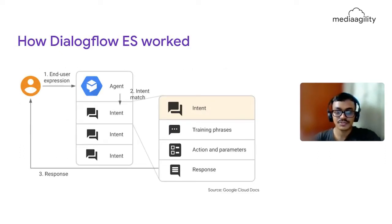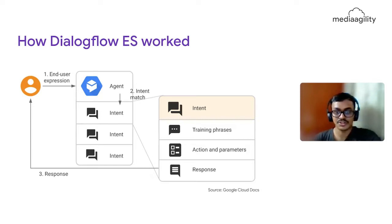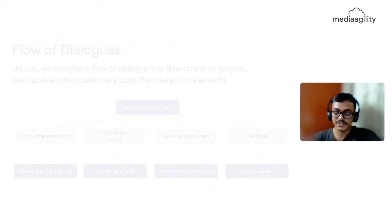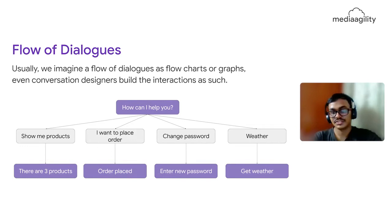This is how ES worked: you have just a list of intents, and each intent has training phrases, actions, and a response — all tied together. You can't reuse an action for another intent; if the intent is slightly different but the action is the same, you still cannot reuse it, so you have to create the whole block separately. Dialogflow ES just lets you create a list of intents and match whatever the user says to them.